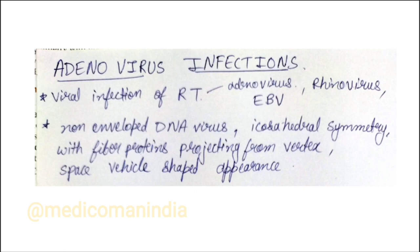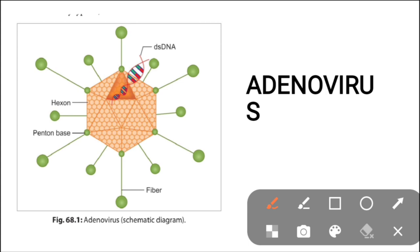Viral infections of the respiratory tract include adenovirus, rhinovirus, and Epstein-Barr virus. Adenovirus is a non-enveloped DNA virus with icosahedral symmetry and fiber proteins projecting from the vertex — giving it a space-vehicle-shaped appearance. It contains double-stranded DNA and is non-enveloped.